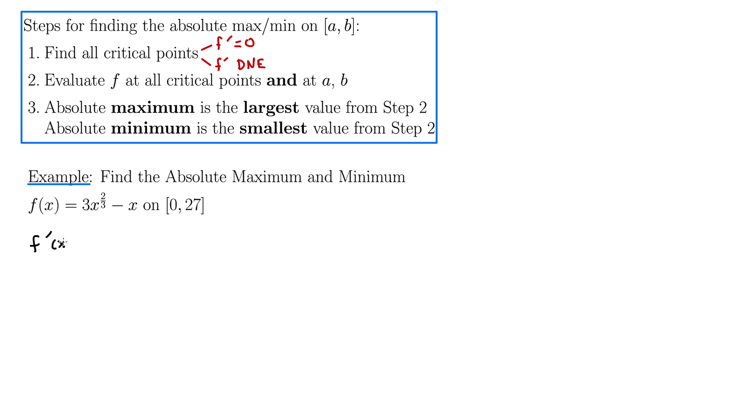Hit it with the power rule here. We have f'(x) equals, well, three times two thirds is simply two. X to the two thirds minus one is negative one third. And then minus one.